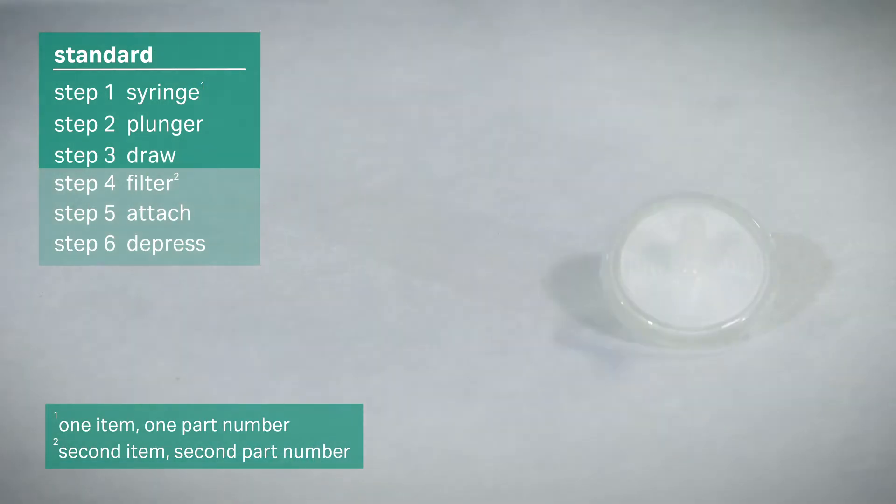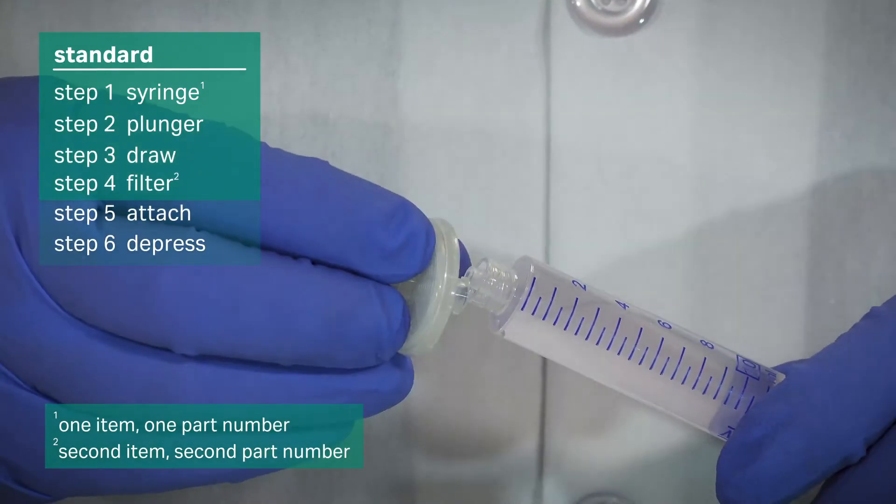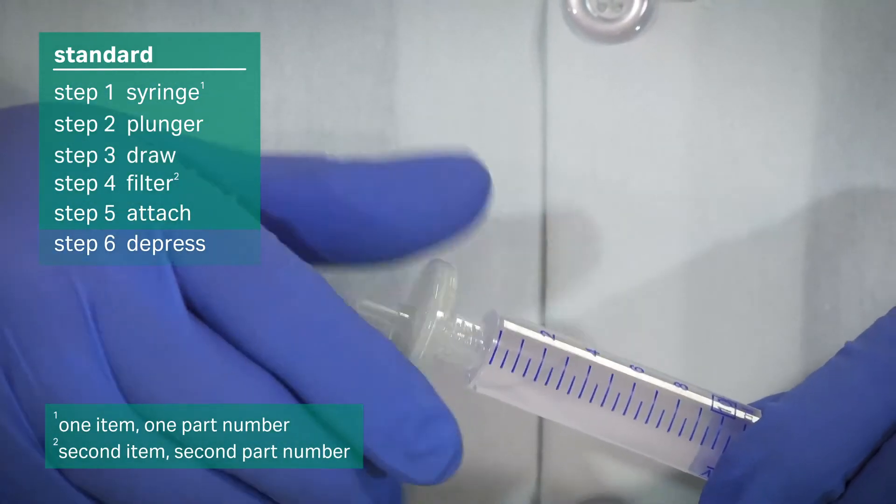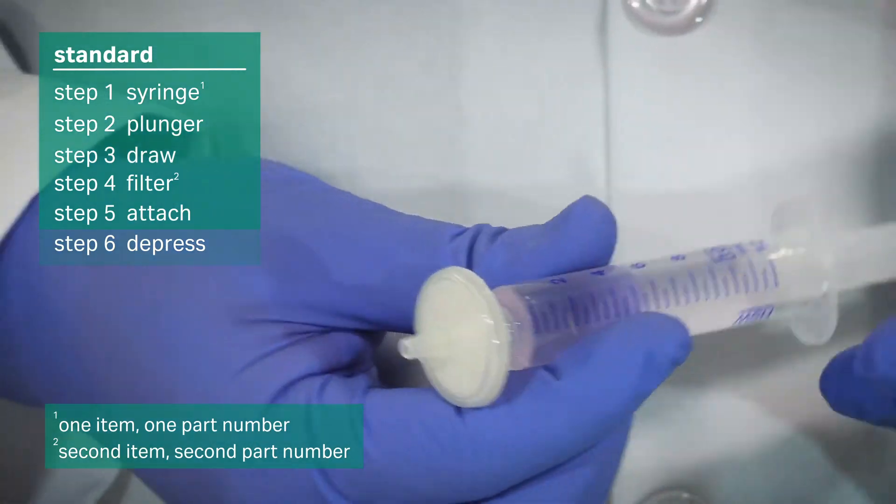Now retrieve the syringe filter and place it onto the syringe by using the slip luer fitting or luer lock on the end of the syringe.